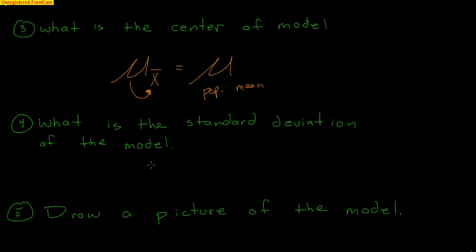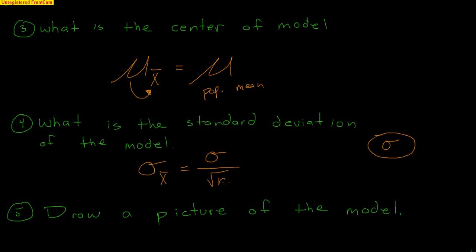What is the standard deviation? Sigma with a little x-bar is the standard deviation of the sampling distribution for your sample mean x-bar — not the standard deviation of the population. Sigma all by itself is the standard deviation of the population. The formula for the sampling distribution's standard deviation is sigma divided by the square root of n. This shows that a bigger sample varies less: as n gets bigger, the standard deviation for a sampling distribution gets smaller.